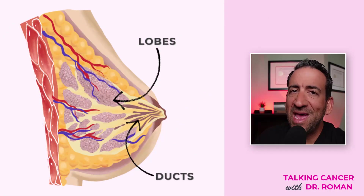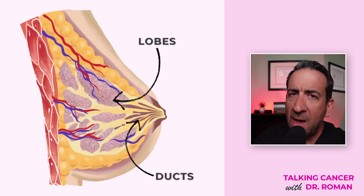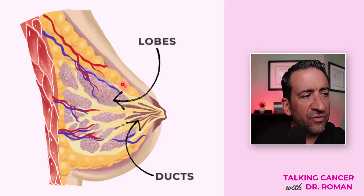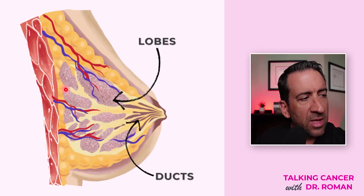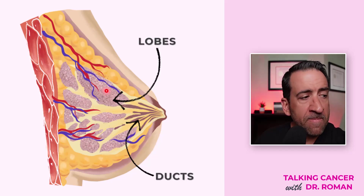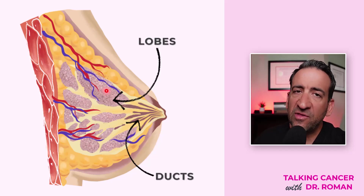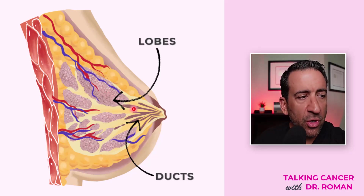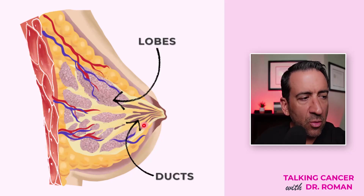Let's start with the anatomy of the breast so you understand where the names 'lobular' and 'ductal' come from. The breast has lobes or lobules — this is the area where breast milk is made. This breast milk is carried out to the nipple through the ducts.